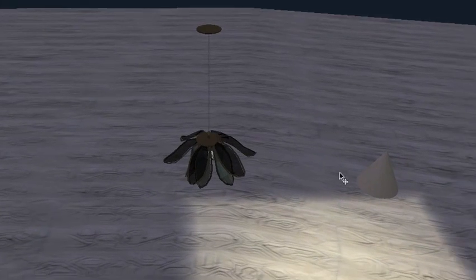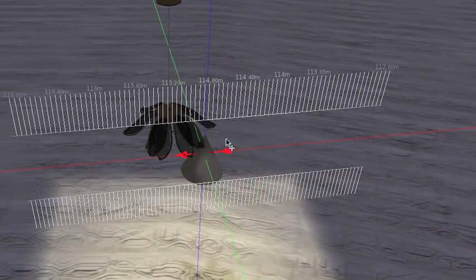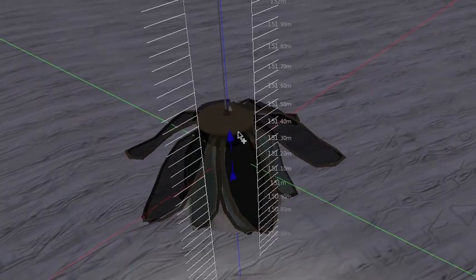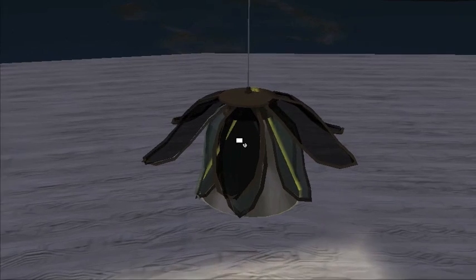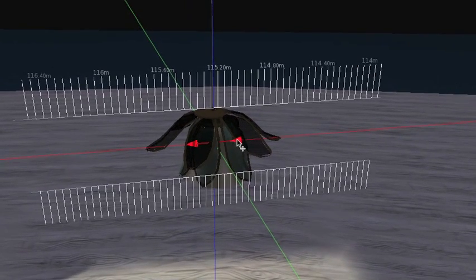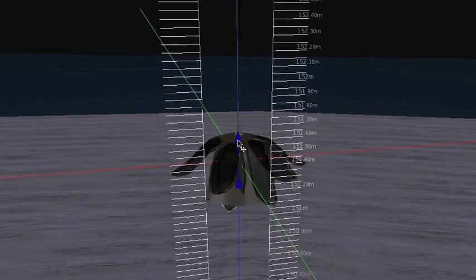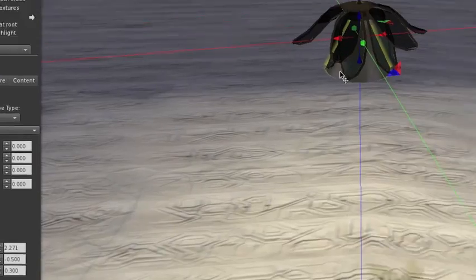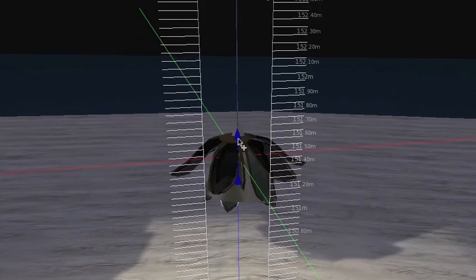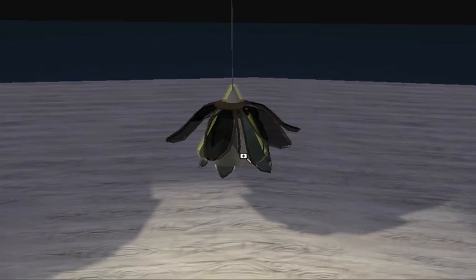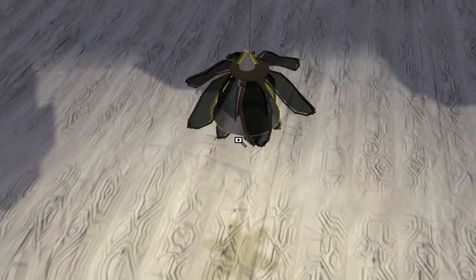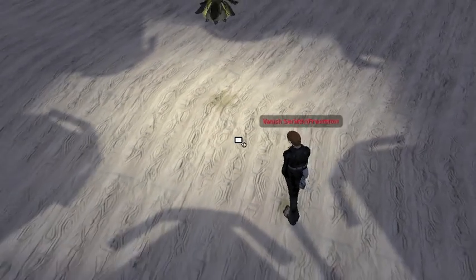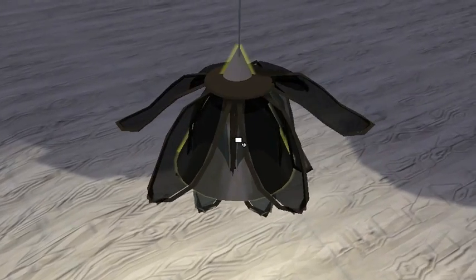And if I go ahead and move my light source inside, I need to adjust the focus here. It will actually cast the shadows of these little, let's call them leaves or blades of the lamp, all around. So all I need to do now is to...